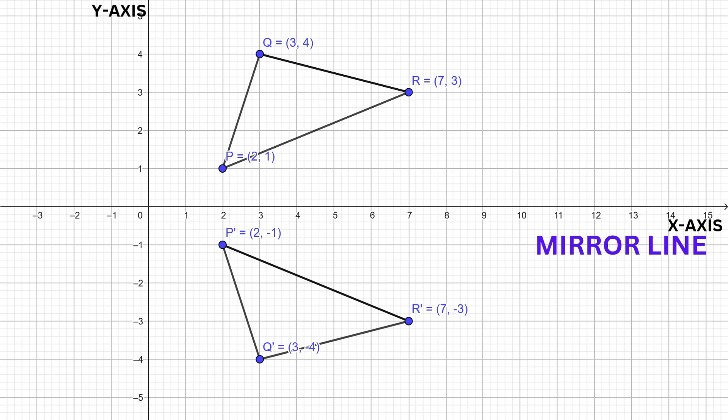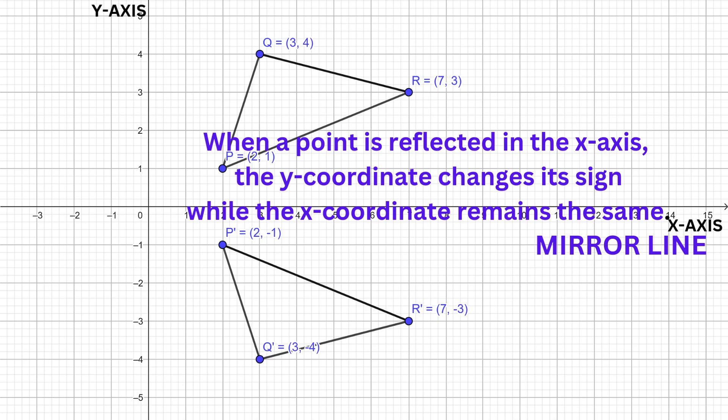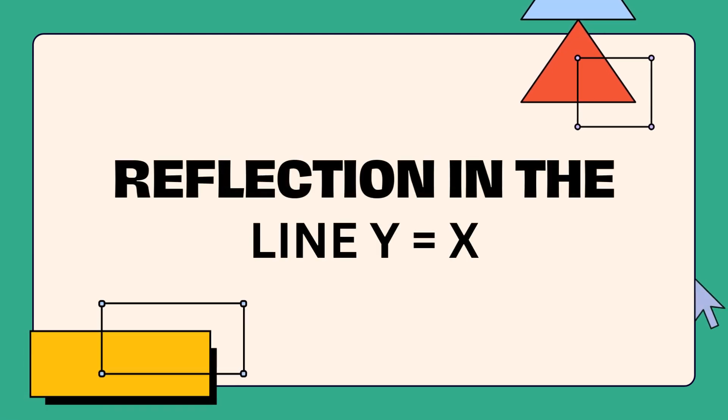Now let's compare the coordinates of the original triangle with those of the image triangle. Notice that the y-coordinates were transformed, or changed to different signs. We can therefore conclude that when a point is reflected in the x-axis, the y-coordinates change their signs while the x-coordinates remain the same.